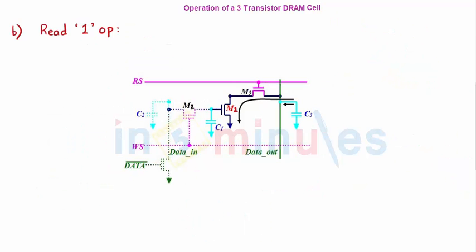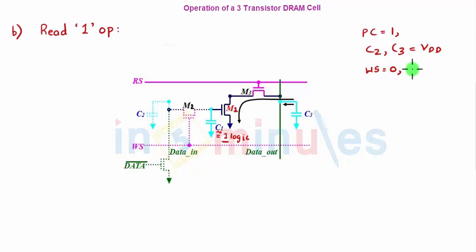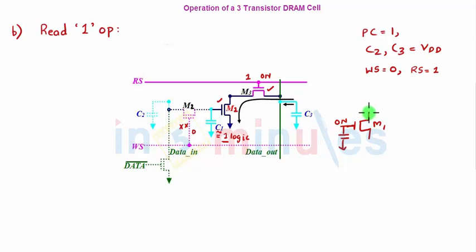Now let's read this 1. Again first make PC equal to 1, so C2 and C3 are charged to VDD. C1 is also presumed to hold logic 1 from the write operation. For reading: write select is 0 so M2 is off, read select is 1 so M3 is on. Because 1 was written on C1, that logic 1 is given to M1's gate as well, so M1 is also on. Now C3, which is charged to VDD, has a path to discharge through M3 and M1.